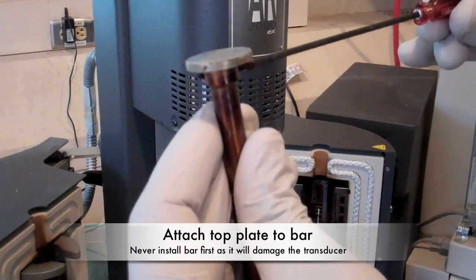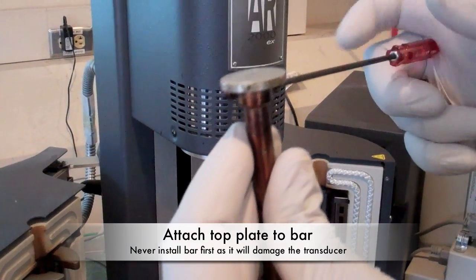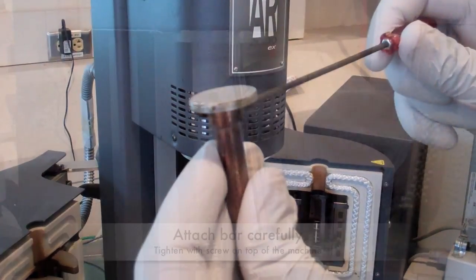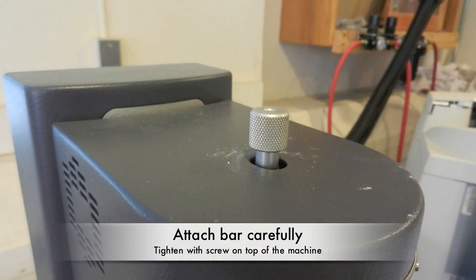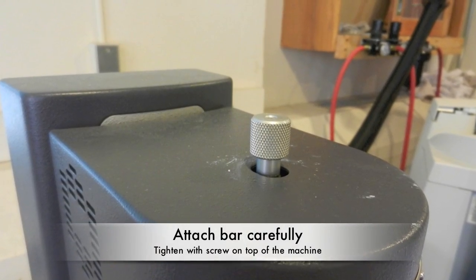Never attach the bar first as the transducer, which controls the machine, is very sensitive. Once the plate is secured, gently insert the bar and then tighten the thumb screw on the top of the instrument.